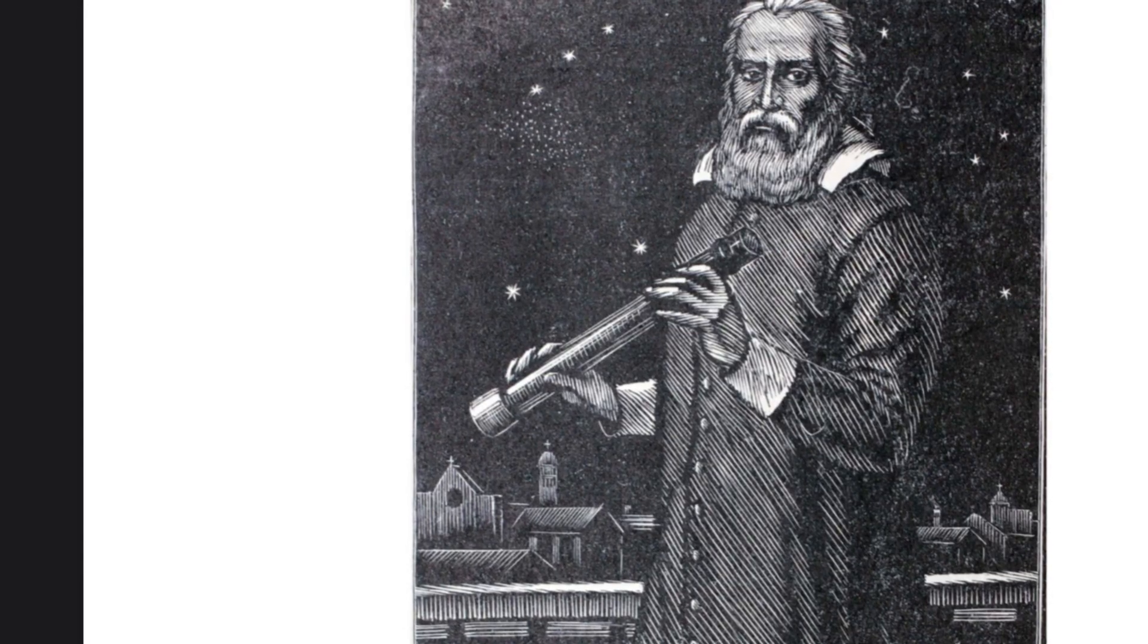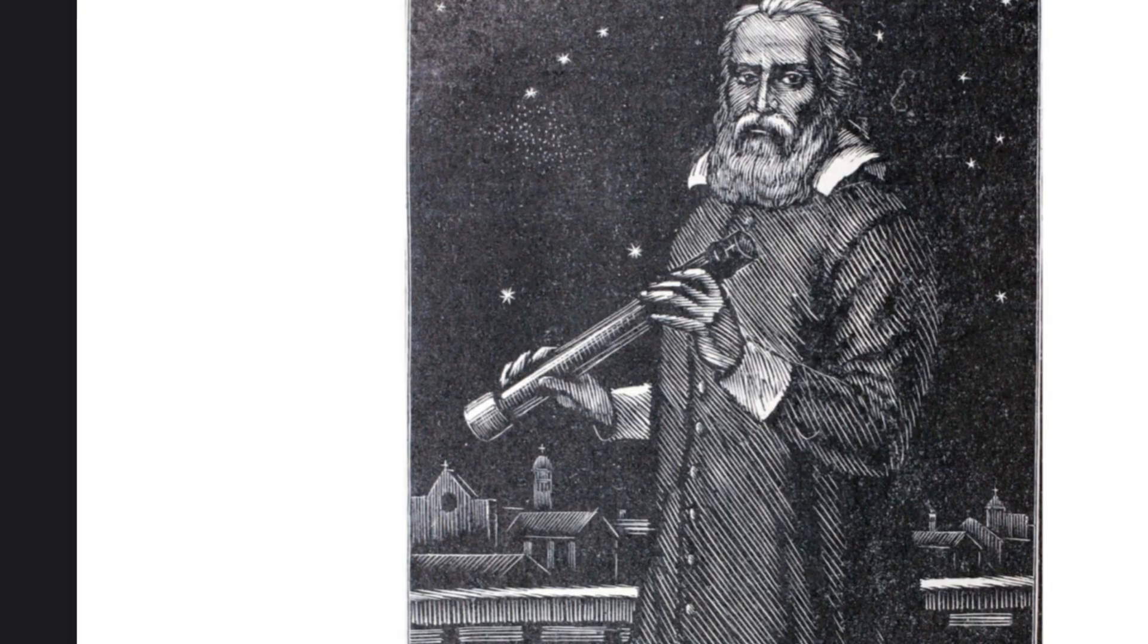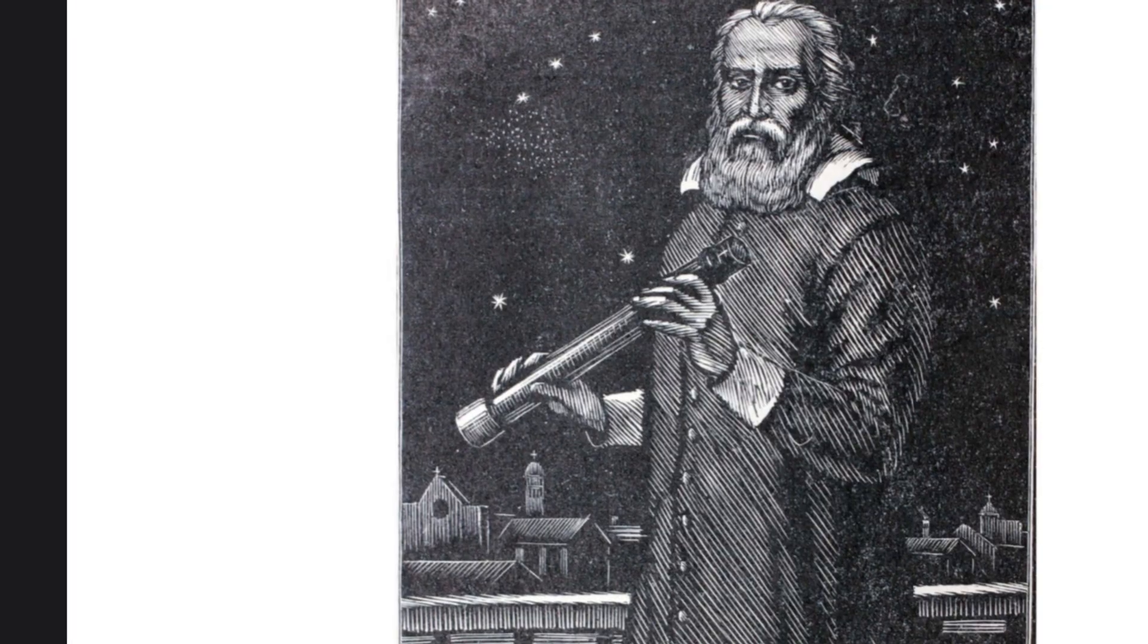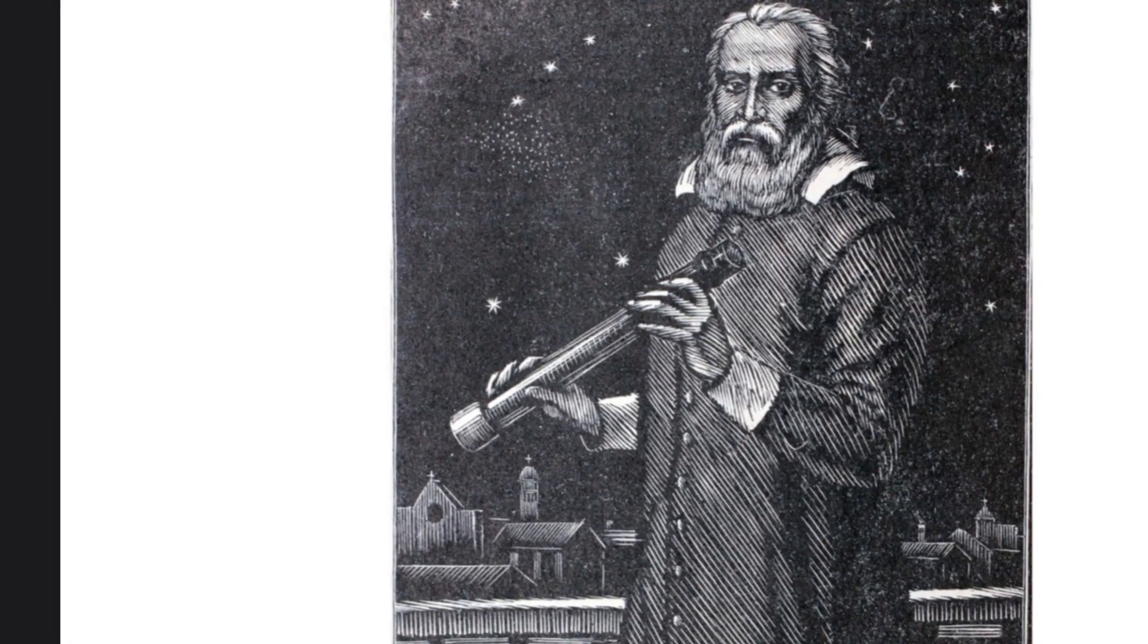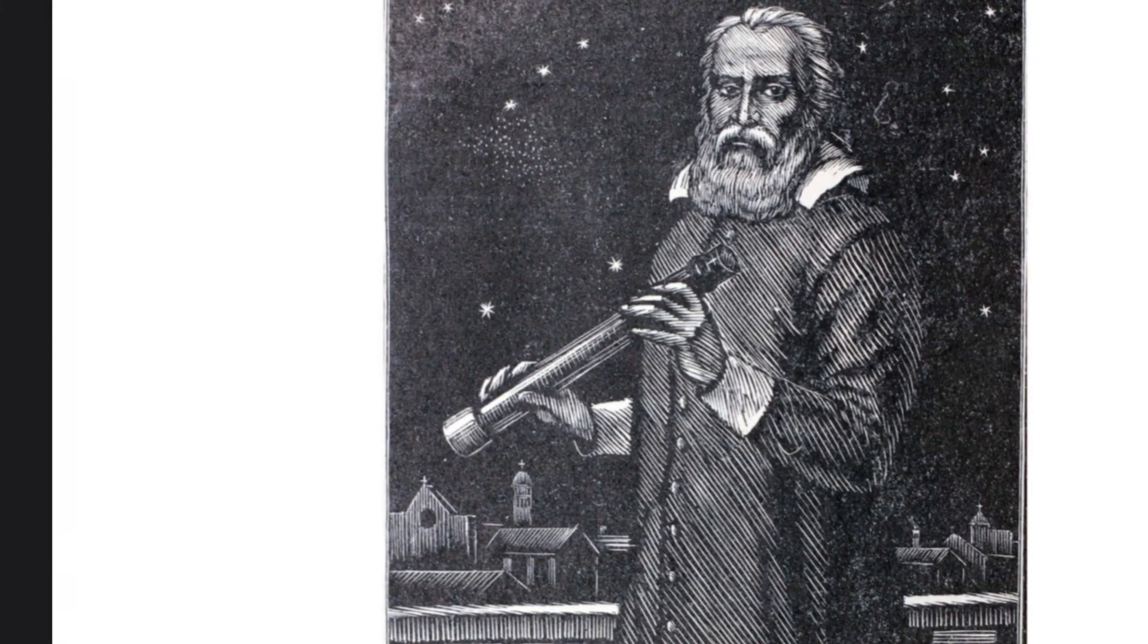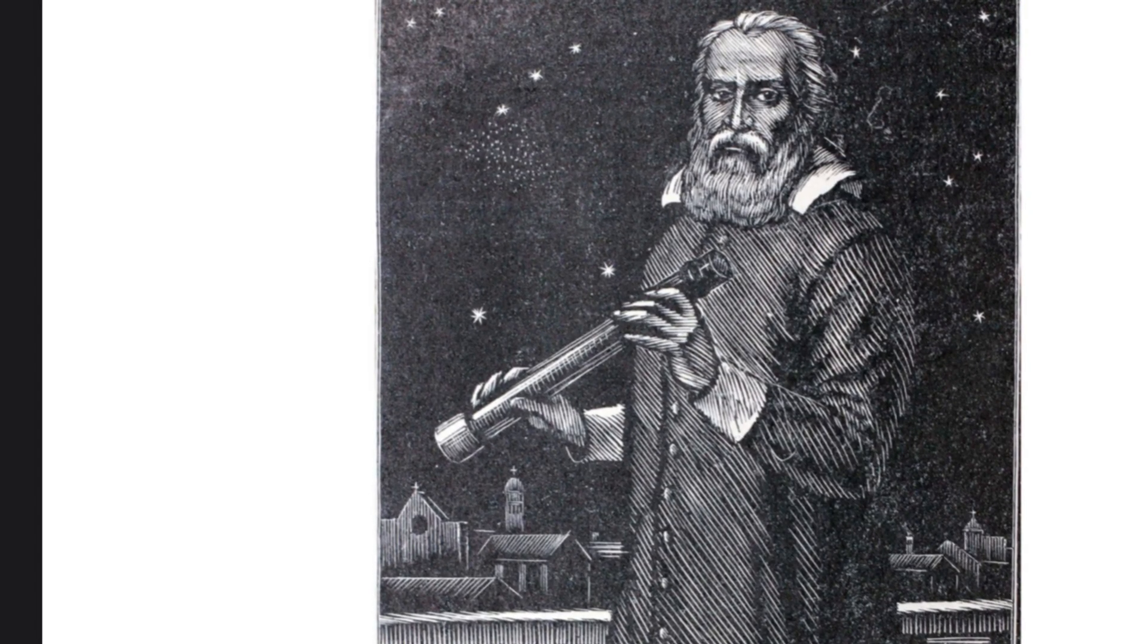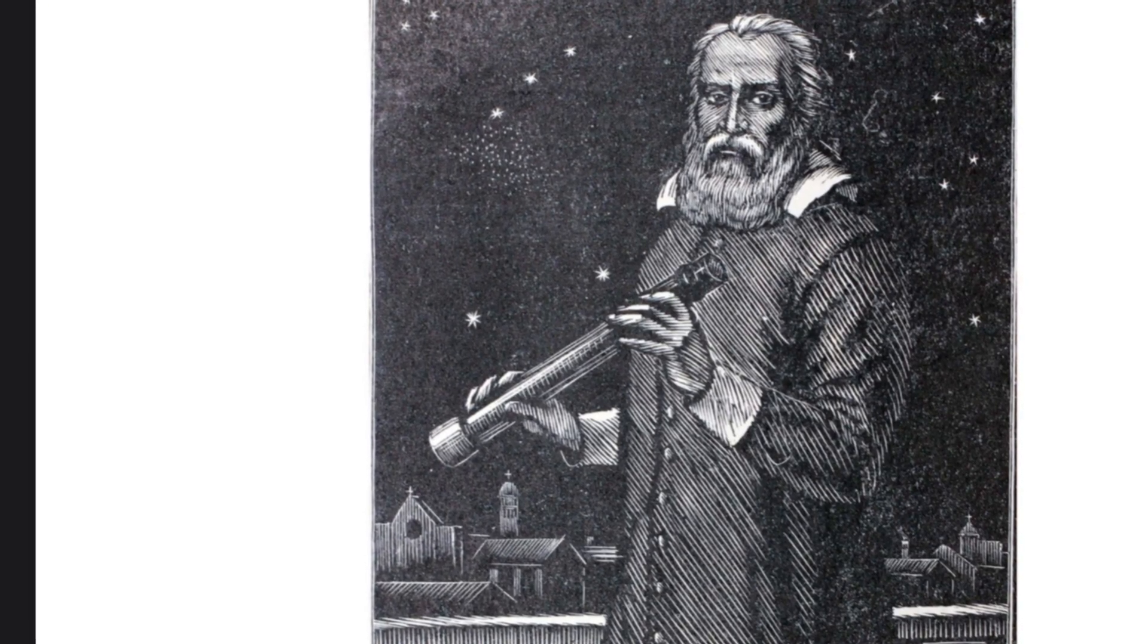Another astronomer named Galileo came after Copernicus, and he believed what Copernicus said about the earth revolving around the sun. He invented telescopes that helped astronomers prove that Copernicus's theory was true. And although Galileo did not invent the first telescope, he did invent very powerful telescopes that helped him and other astronomers make many important discoveries about space.